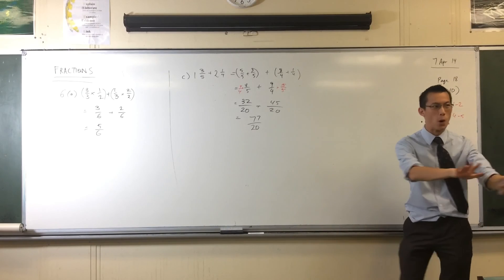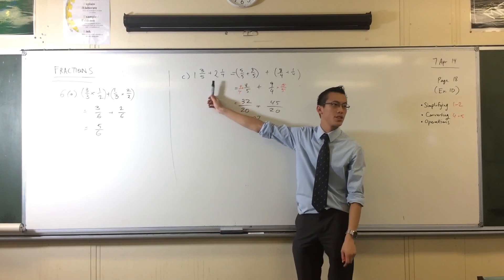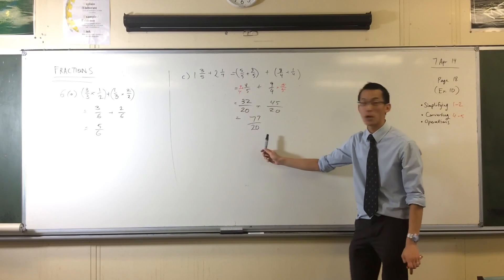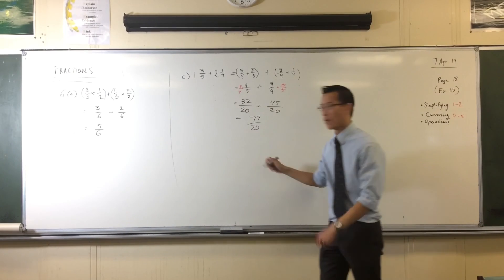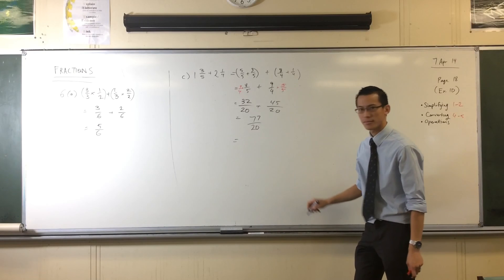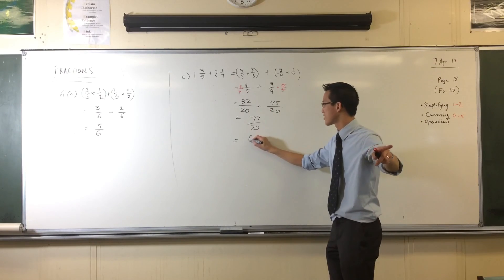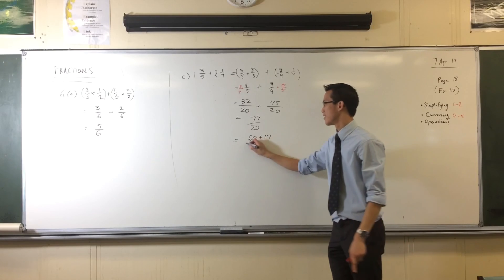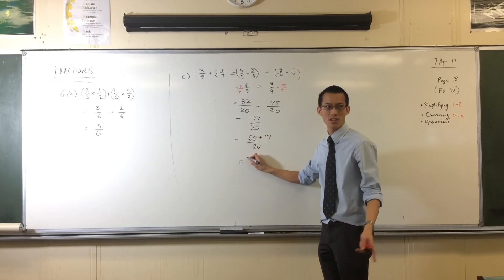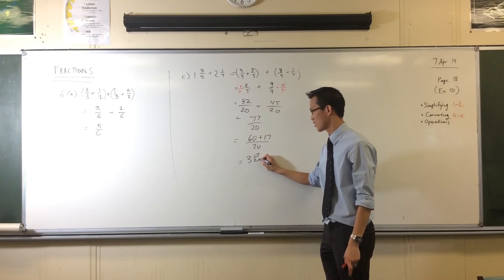For bonus points, because it was given to us in mixed fractions, can we put it back in mixed fractions? How do we do it? How many times does twenty go in? Three. Three times. Seventeen. So it's three and seventeen twentieths.